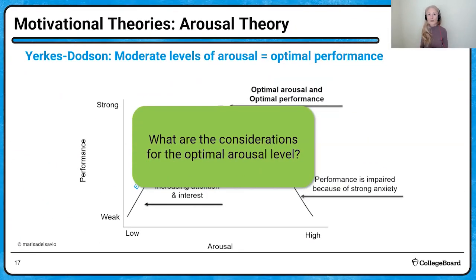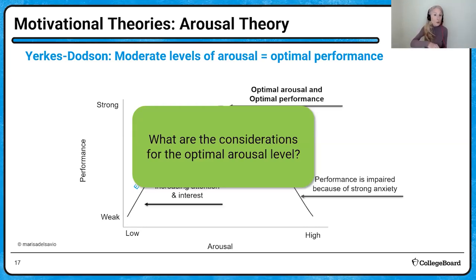Yerkes-Dodson looked at arousal theory and certain tasks, saying that moderate levels of arousal equal optimal performance. Too little arousal and you're not engaged — you won't pay attention or perform well. Too much arousal and you're really stressed, and we know what stress can do to performance.